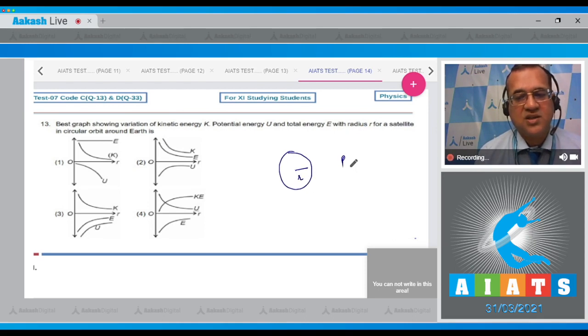Then its potential energy is minus GMm divided by r. And what would the kinetic energy be? The kinetic energy is equal to GMm divided by 2r, and the total mechanical energy is equal to minus GMm by 2r.